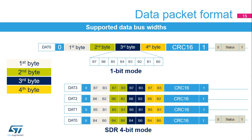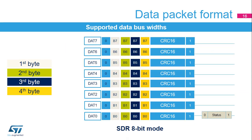In a 4-bit data width configuration, each line has its own start bit, end bit, and CRC16 checksum. When the data is sent to the card, the card returns a CRC status on the SDMMC D0 pin. In this example, the 4 bytes are sent over the SDMMC bus in 8-bit mode. For each SDMMC CK clock cycle, a byte is shifted out with a start bit, end bit, and CRC16 checksum on each data line. When the data is sent to the card, the card returns a CRC status on the SDMMC D0 pin.